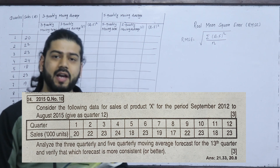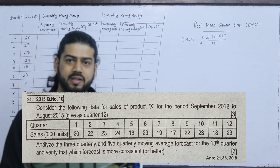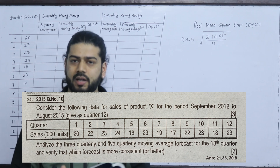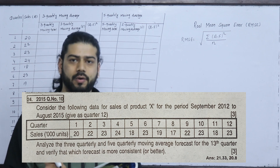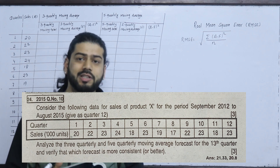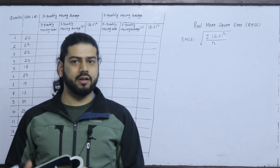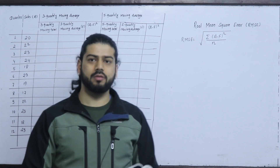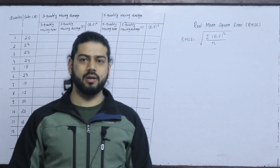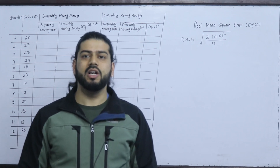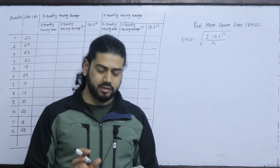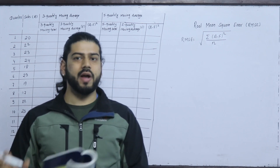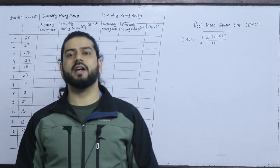In this moving average method, we will forecast this. If we have least squares equations, we will make a separate video. We will provide that. We will add the Y equals to A plus Bx pattern as a separate topic.